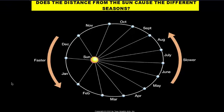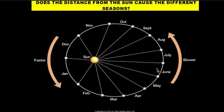Just to dispel that answer, here's a diagram of Earth throughout its orbit around the Sun, marked with the months in which they are located. Our coldest months — December, January, and February — are actually the closest positions to the Sun throughout the year, and our warmer months of June, July, and August are the furthest points away from the Sun. So distance has nothing to do with the change in seasons. There are actually two other main reasons.